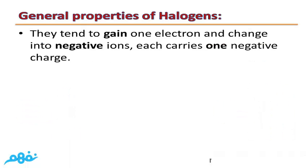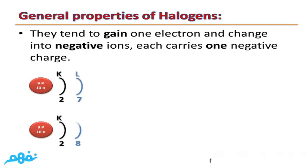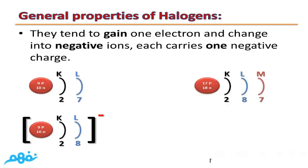The second property is that halogens tend to gain 1 electron and change into a negative ion, each carrying 1 negative charge. For example, a Fluorine atom during a chemical reaction will gain 1 electron and change into a negative Fluorine ion. The same applies to the Chlorine atom.